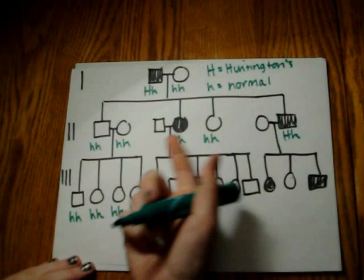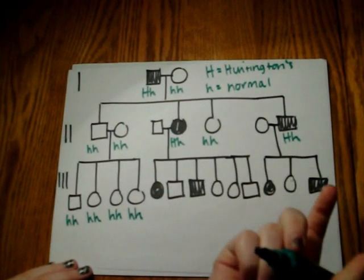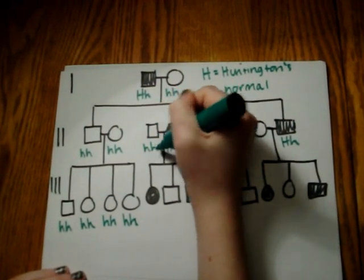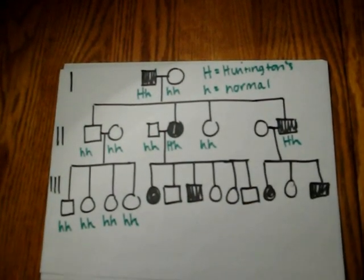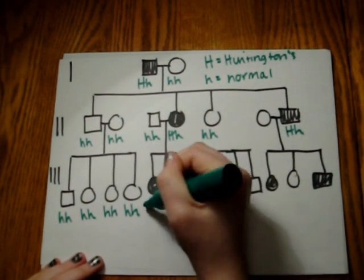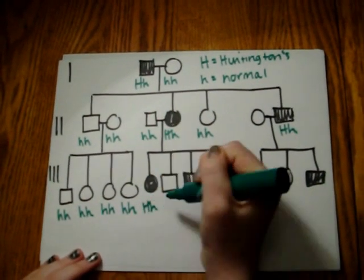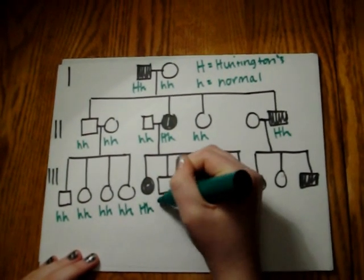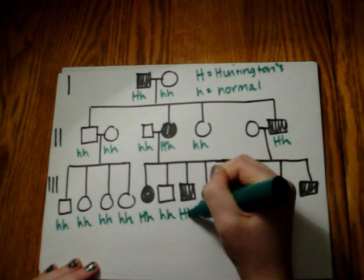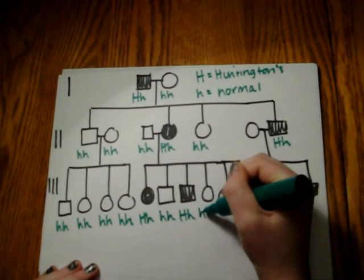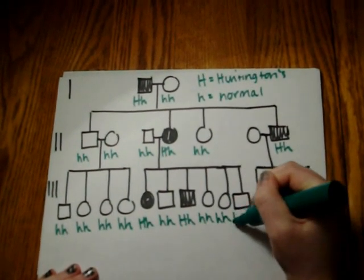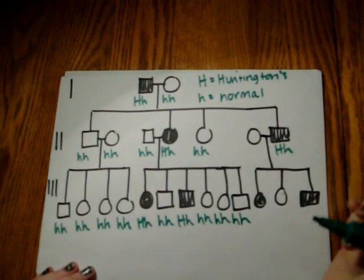This offspring mates with an unaffected male. They have six offspring, and the genotypes are: Hh, hh, Hh, hh, hh, and hh.